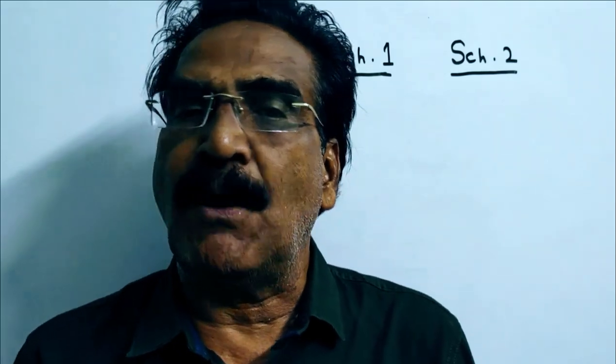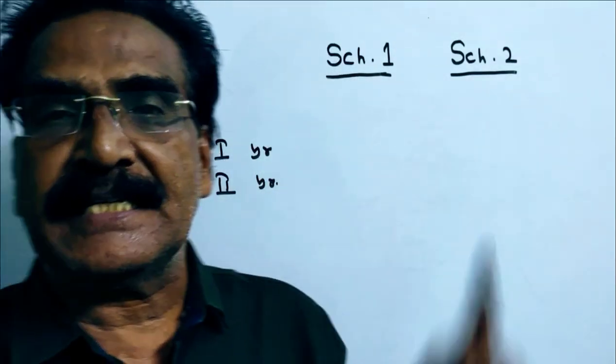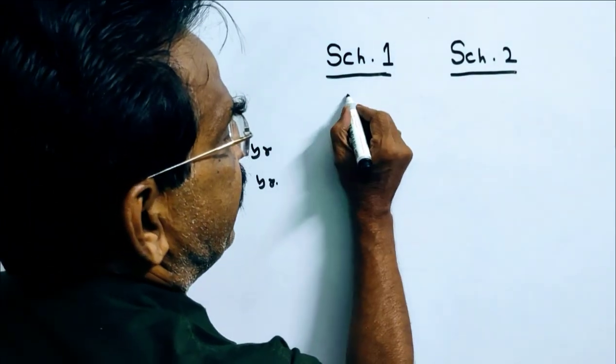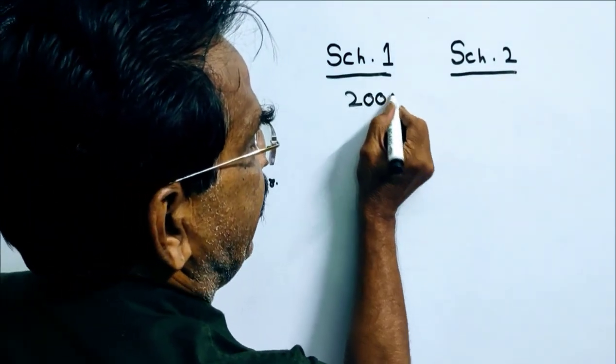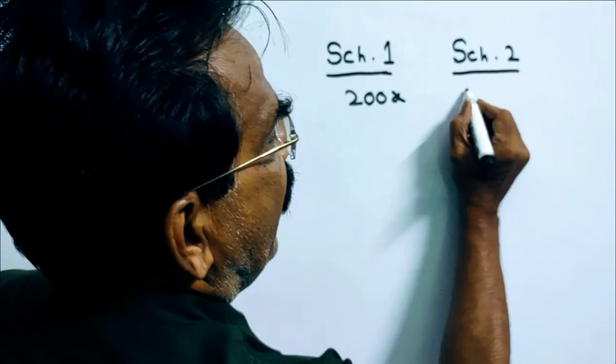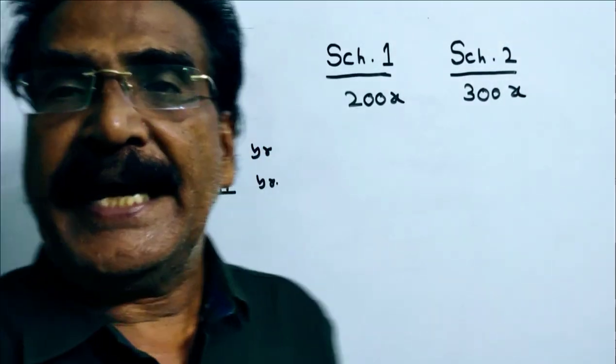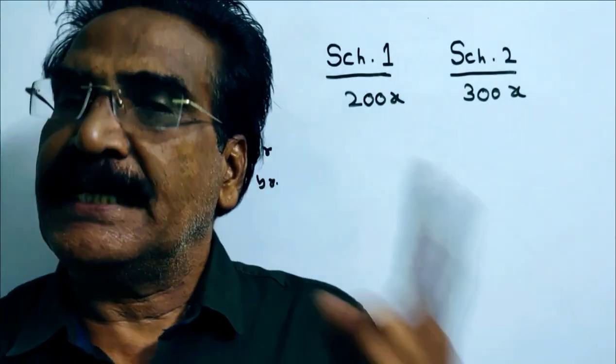See friends, a man invested an amount in two schemes in the ratio 2 is to 3. So he invested 200x in scheme 1 and 300x in scheme 2 at 20% per annum and 10% per annum compound interest.